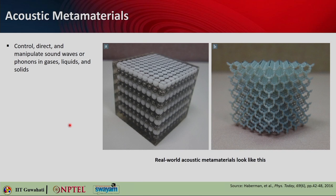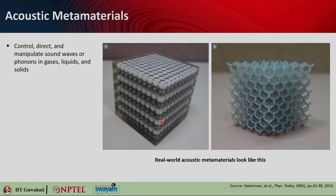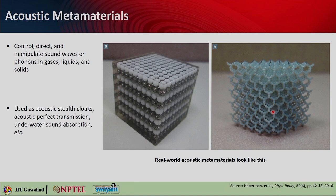Acoustic metamaterials allow control, direction, and manipulation of sound waves or phonons in gases, liquids, or solids. A real-world example is a sonic crystal — a periodic 3D crystal where a particular range of sound frequencies cannot propagate in a certain direction, analogous to a photonic crystal. Another example is the penta-mode metamaterial, which supports stress in only one of six possible modes and has inspired many acoustic metamaterial designs. Applications include acoustic stealth cloak, acoustic perfect transmission, underwater sound absorption.